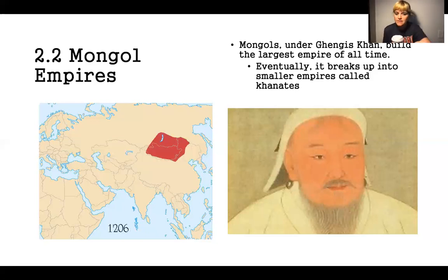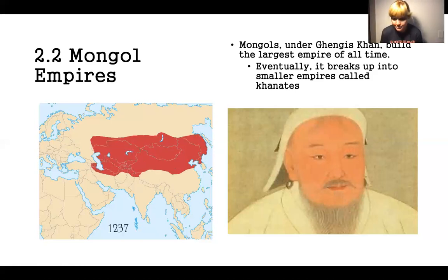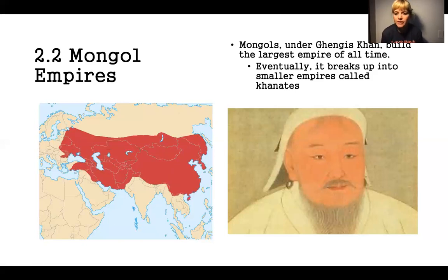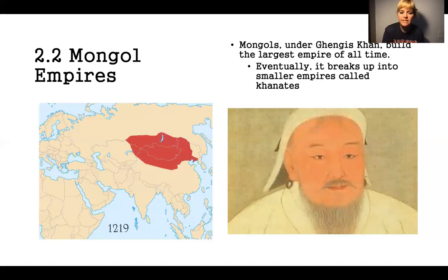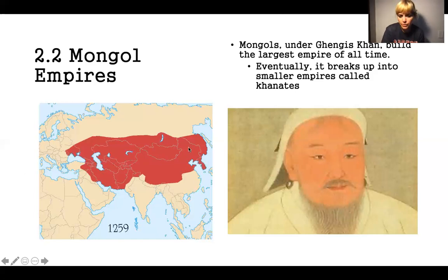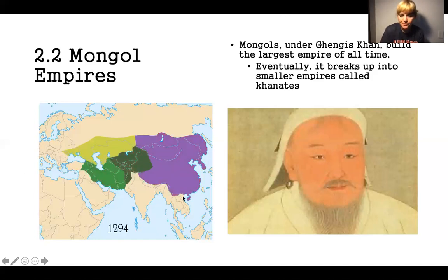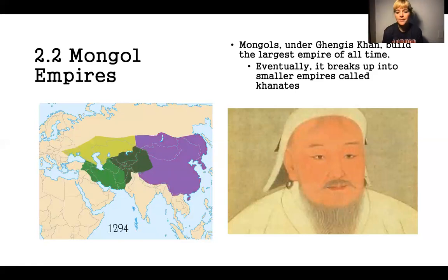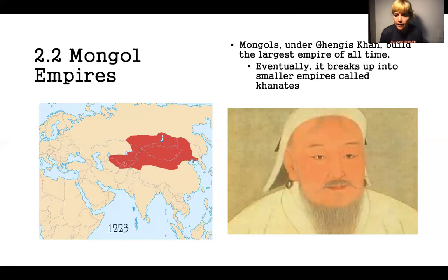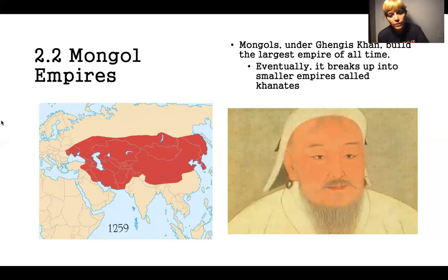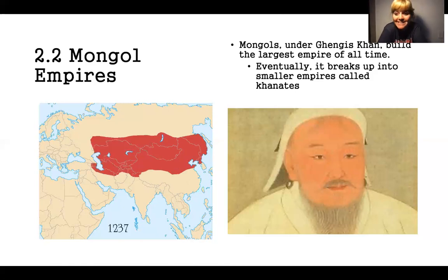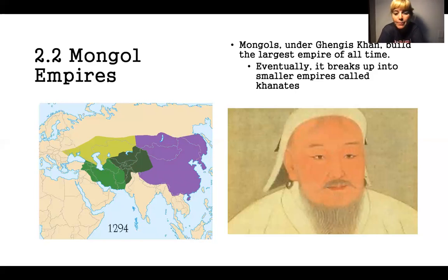Eventually the Mongol Empire is going to break up. It's really, really hard to control an empire of this gigantic size. So Genghis Khan is going to break up the empire into different Khanates, and his grandsons will rule them. One of the most important ones — shown in purple on the map — is a dynasty that rules China, the Yuan dynasty, ruled by his grandson Kublai Khan. The Golden Khanate is modern-day Russia. Just know that while this is the largest empire of all time, it will eventually break up into smaller empires.